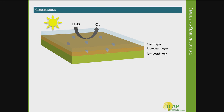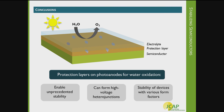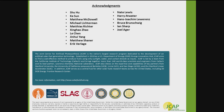To conclude: a lot of work at JCAP by graduate students, postdocs, and staff scientists has been devoted to developing these protection layers. They've shown very good performance in protecting photoanodes for water oxidation, enabled unprecedented stability, and been shown to form high-voltage heterojunctions in combination with various semiconductors. They can also protect materials with different form factors, which is quite important for the creation of integrated solar fuels devices. Thank you very much for your attention.